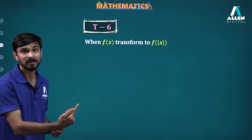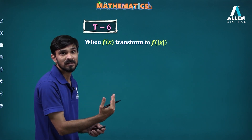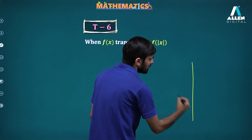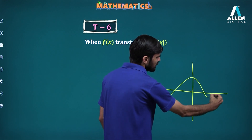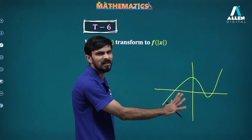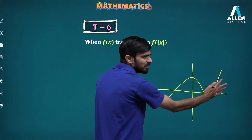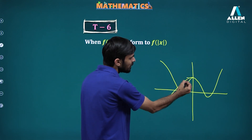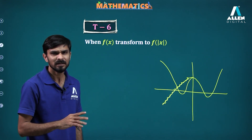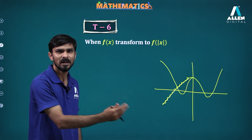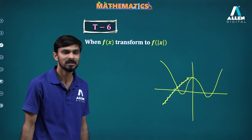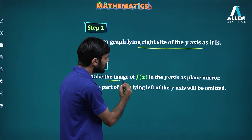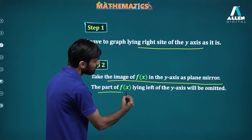When f(x) transforms to f(mod x), that means whatever negative inputs were coming, they will now give the same output as the positive inputs. If you have a graph, whatever positive inputs were there stay the same — no change on the positive side. But for the negative side, all the negative inputs now start behaving like positive inputs, and the original negative-side graph will not exist. Positive inputs give the same output as before, but negative inputs start behaving like positive ones.